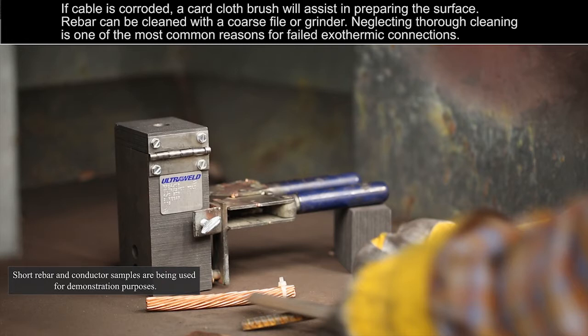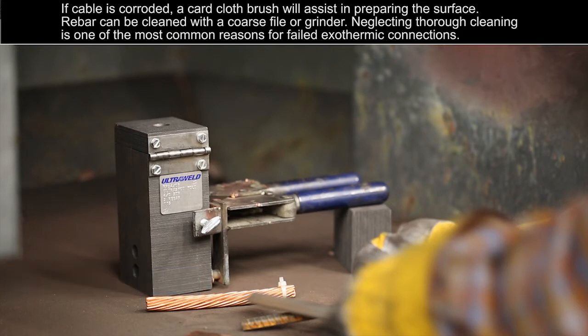If the cable is corroded, a card cloth brush will assist in preparing the surface. Rebar can be cleaned with a coarse file or grinder. Neglecting thorough cleaning is one of the most common reasons for failed exothermic connections.